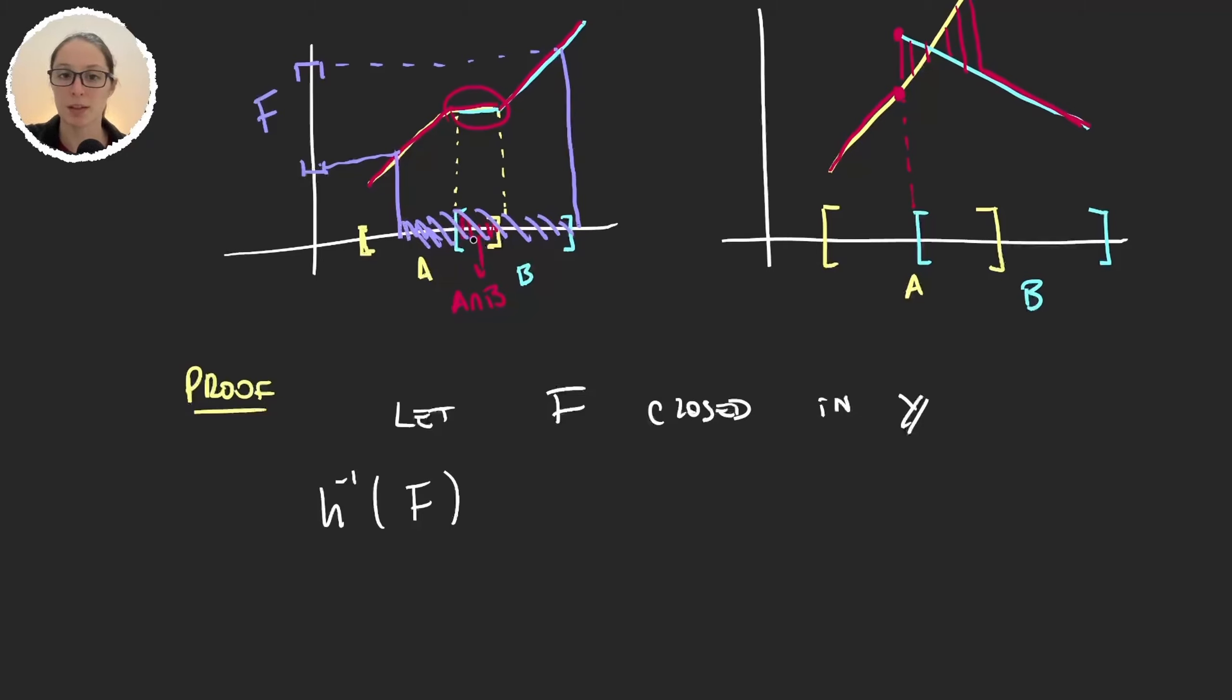Now given that f and g are the same here in the middle, then I can write this as the union of the preimage of f through f and the preimage of f through g.